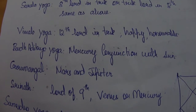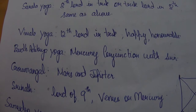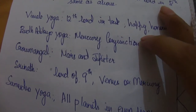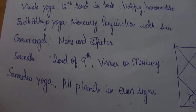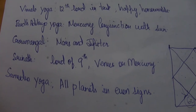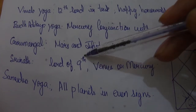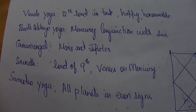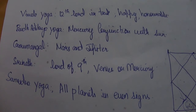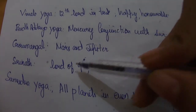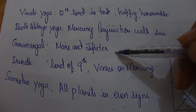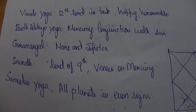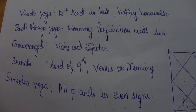Another yoga is Guru Mangal Yoga, which is the conjunction of Mars and Jupiter, also considered good. There is also Srinath Yoga, in which the Lord of the 9th, or Venus, or Mercury are present in their own houses or are exalted. If the Lord of the 9th is exalted, or Venus or Mercury are exalted in their signs, this gives rise to Srinath Yoga, which is considered very fortunate.